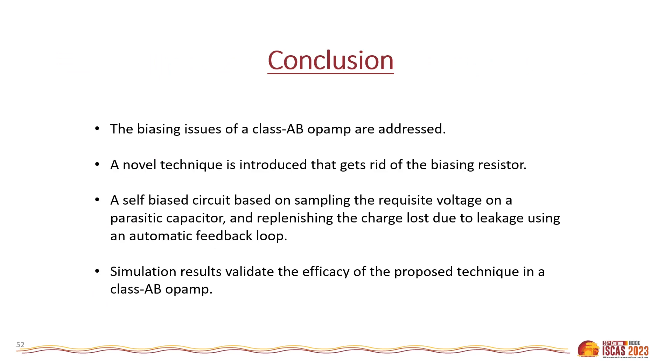So in this work, the biasing issues of a class AB op-amp are addressed for the technologies that suffer from significant leakage current. The leakage current introduces a large voltage drop across the biasing resistor. So a novel biasing technique is introduced that gets rid of the biasing resistor. This technique is based on sampling the requisite voltage on a parasitic capacitor and replenishing the charge lost due to leakage using an automatic feedback loop. Note that the automatic feedback loop is self-biased and does not need any external reference to work on. The simulation results validate the efficacy of the proposed technique in a class AB op-amp. Thank you.